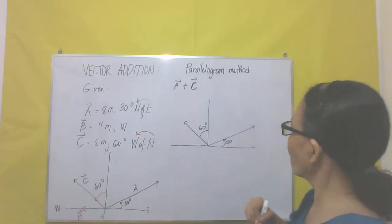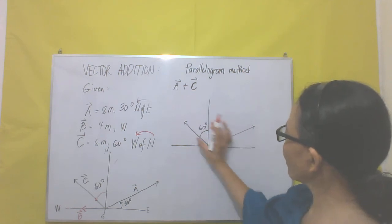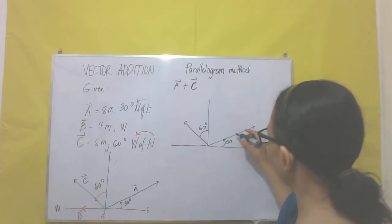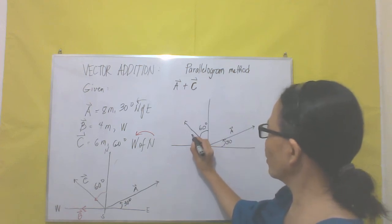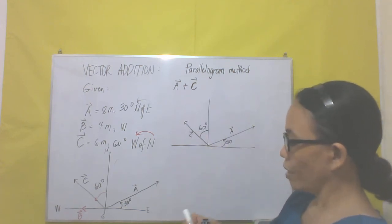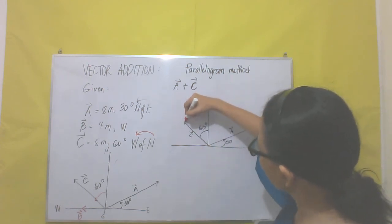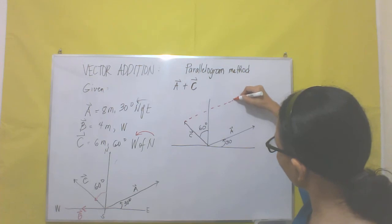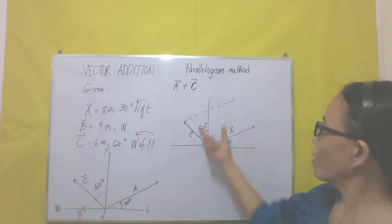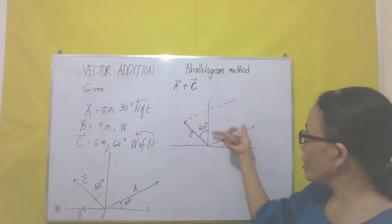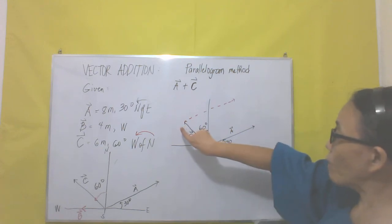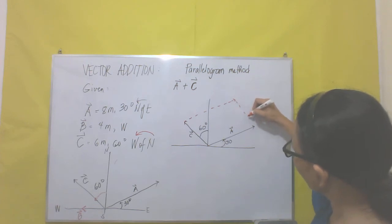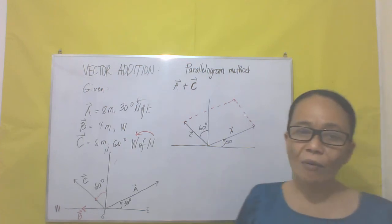Now we are going to make a parallelogram out of these two vectors. We are going to extend a line parallel to vector A, and draw another line parallel to vector C. The broken lines represent the parallel extensions, and this forms a parallelogram.